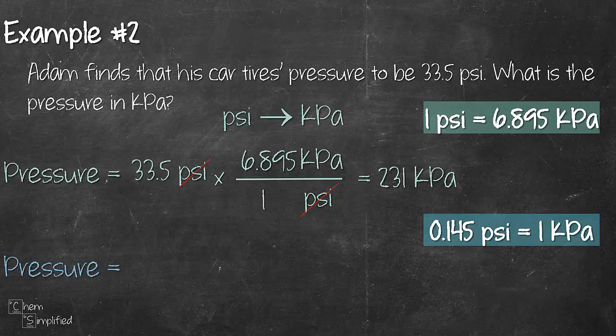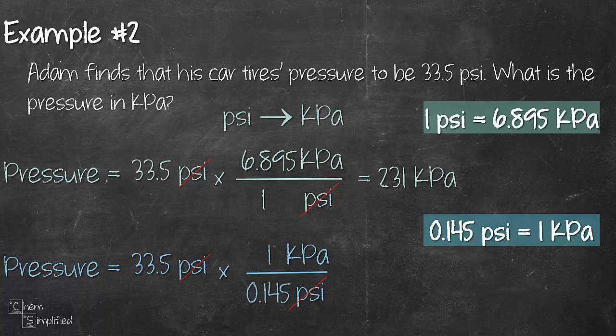So we need to find the pressure, start off with 33.5 PSI. That's what we are given. Multiply, draw a line across, put PSI at the bottom so it cancels off. kPa on the top and then we place in the value. So now instead of placing 1 for PSI and 6.895 for kPa we're gonna place in 1 for kPa and 0.145 for PSI and that will give us the same answer.